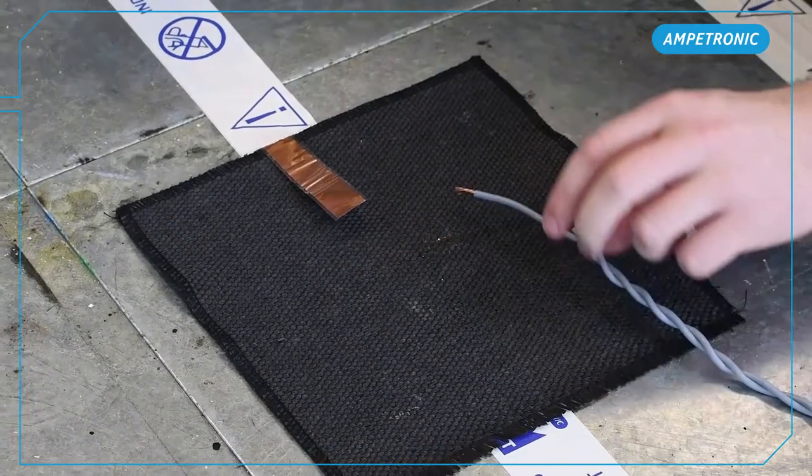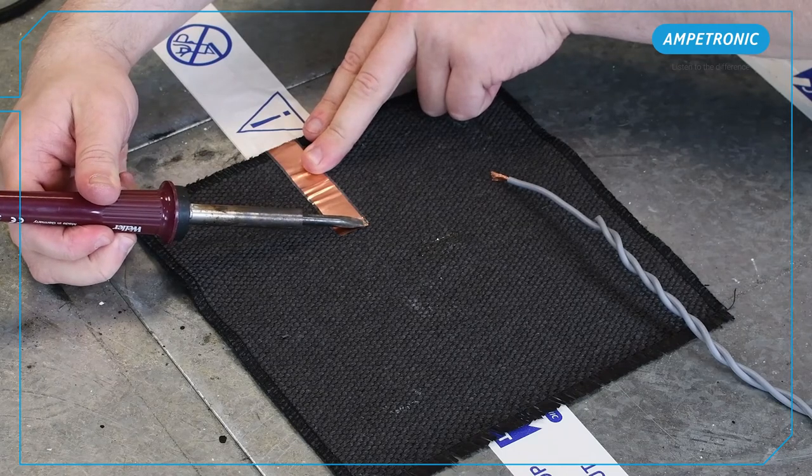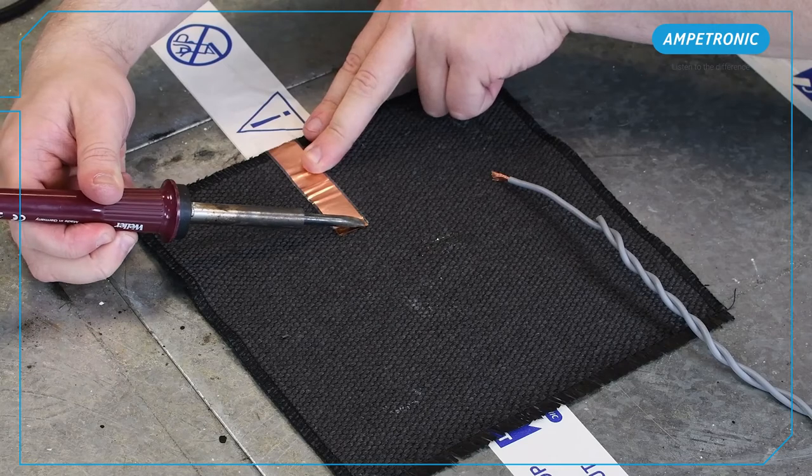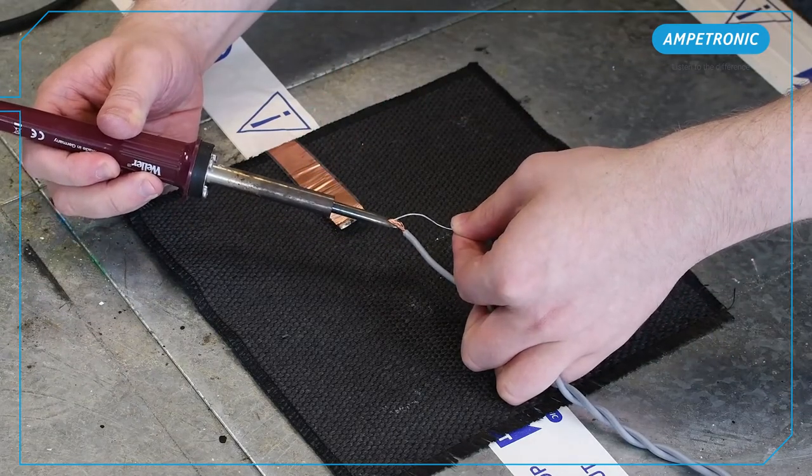When connecting feed cables, you follow the same approach. In most cases, you'll be using a twisted pair as the feed cable for each loop circuit. There is one cable that goes to your send and one cable that goes to your return.